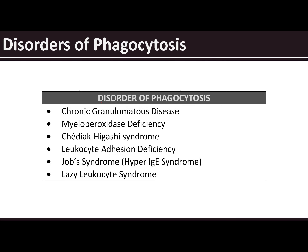The different disorders of phagocytosis include: CGD or chronic granulomatous disease, myeloperoxidase deficiency, Chediak-Higashi syndrome, leukocyte adhesion deficiency, Job syndrome or hyper-IgE syndrome, and lazy leukocyte syndrome.